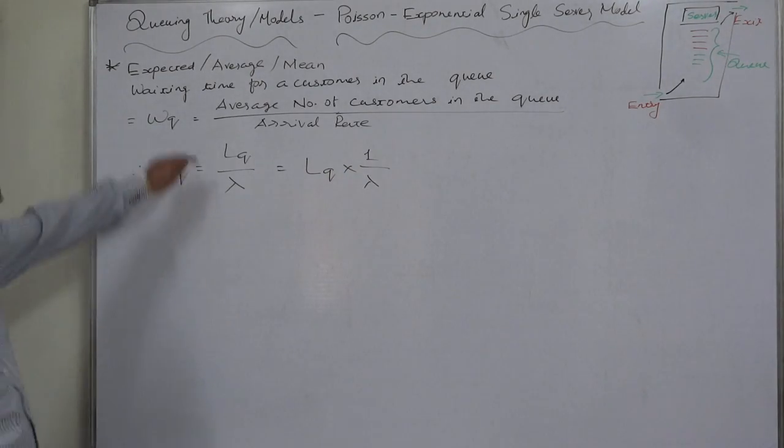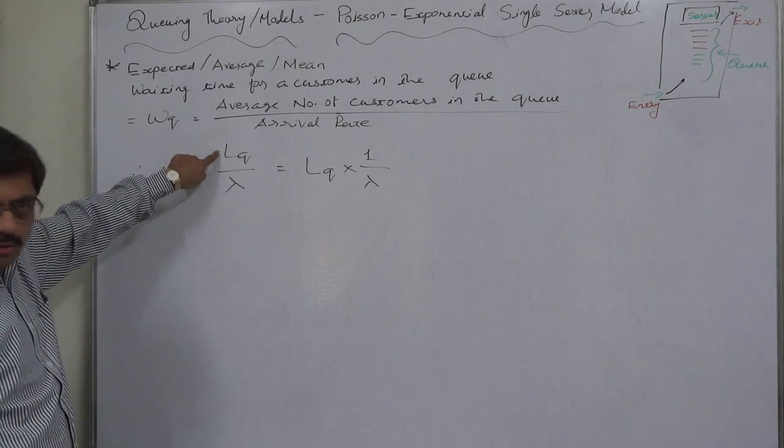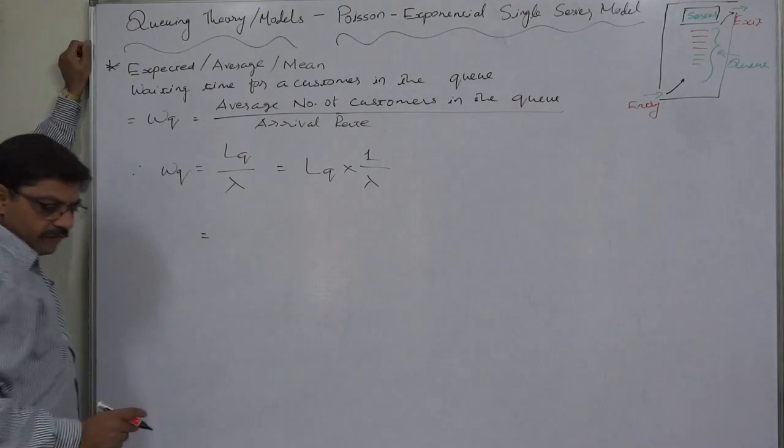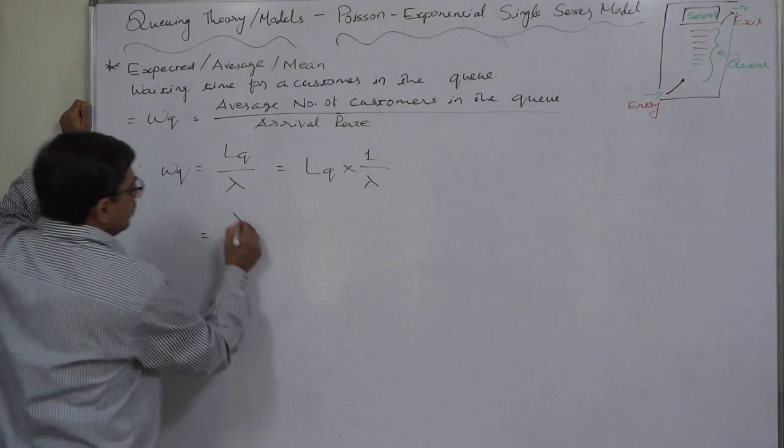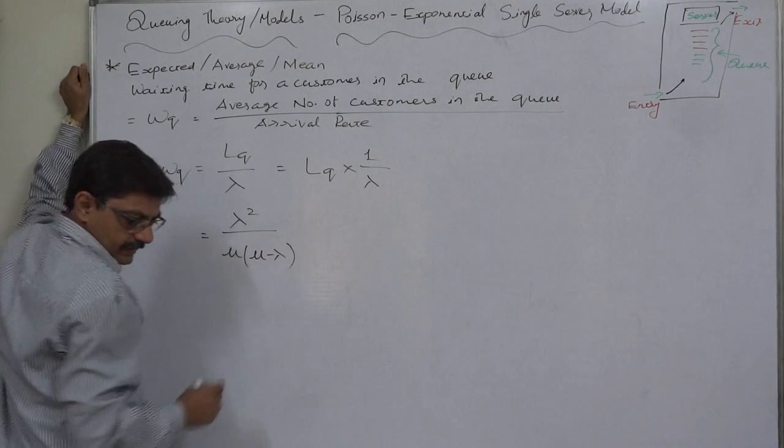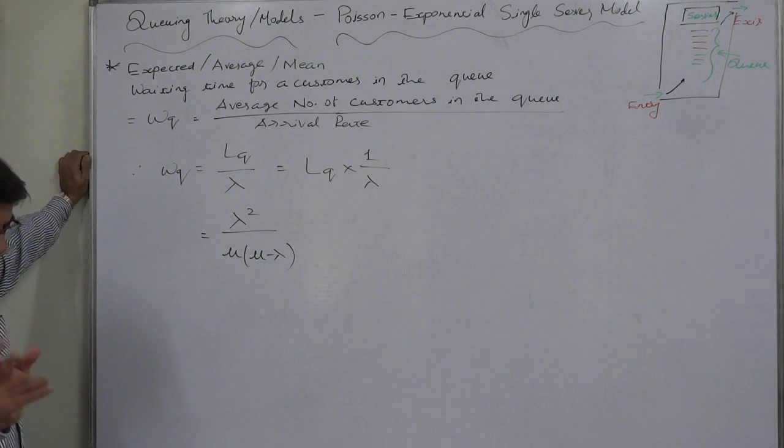In the previous lectures, we had already derived the formula for LQ, the average number of customers in the queue. What was the formula? The formula was lambda squared over mu times mu minus lambda.